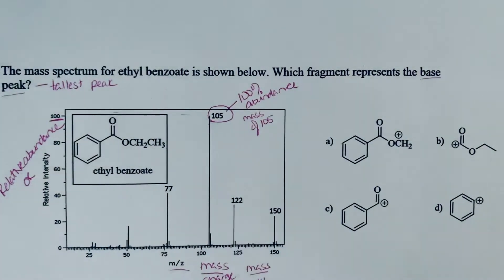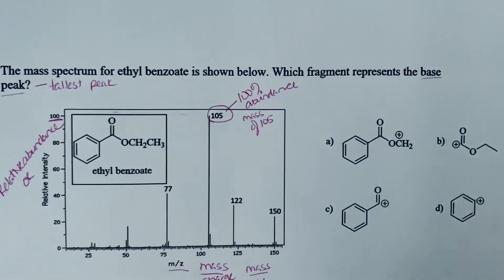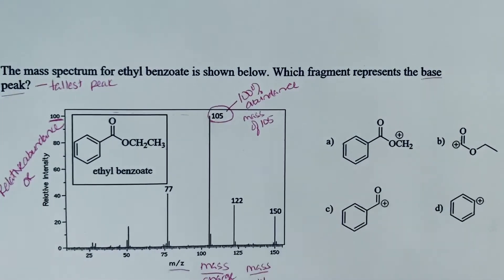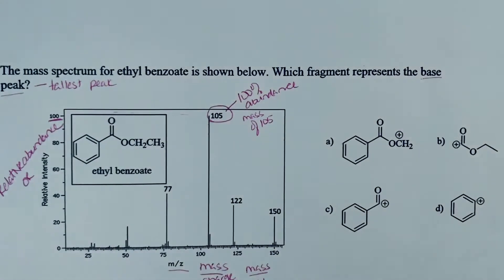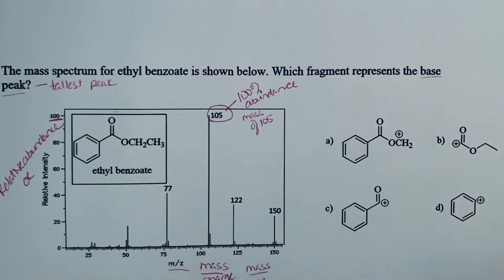Now that we know that, one way you could approach this, and I don't necessarily recommend this, it'll take you a little bit longer, but if you wanted to, you could add up the weight of all of these options, and whichever one weighs 105, then you would know that that's the answer. I'm going to take a little bit more of a methodical approach that'll get us there a little bit quicker, as long as we understand a little bit about what's going on inside of our mass spectrometer.